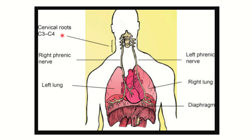The cervical root of the phrenic nerve is cervical 3, cervical 4, and cervical 5 — but most importantly cervical 4. The root of the phrenic nerve arises from the cervical plexus in the cervical region, then descends through the neck and enters the chest.